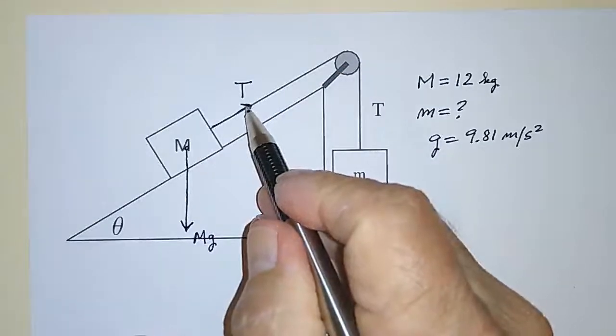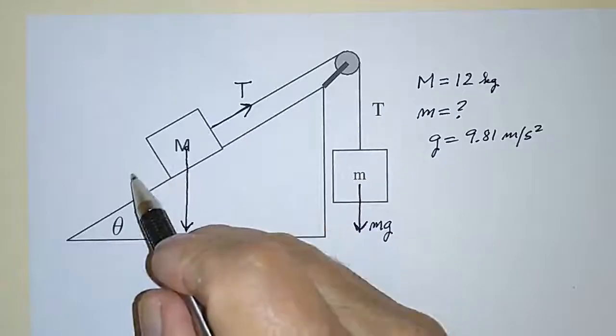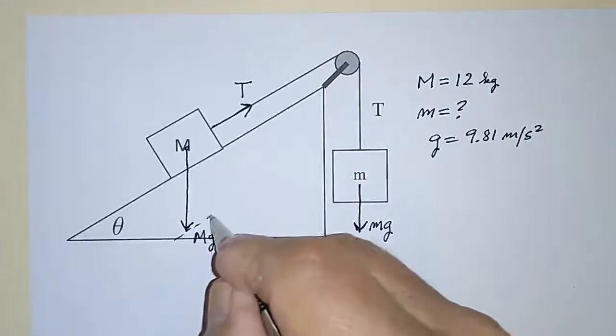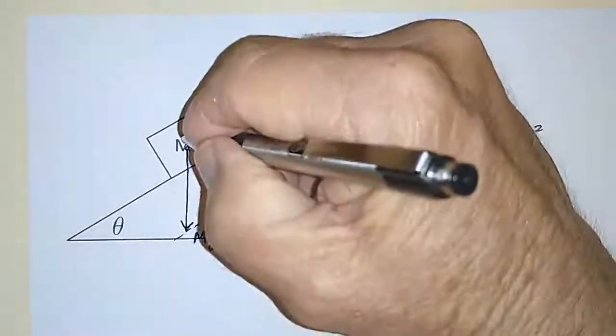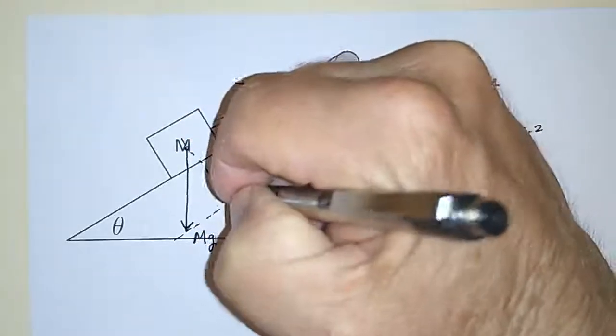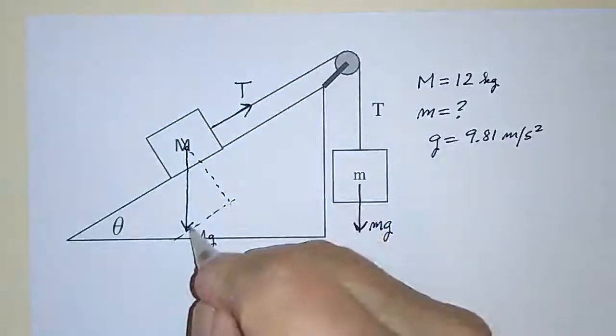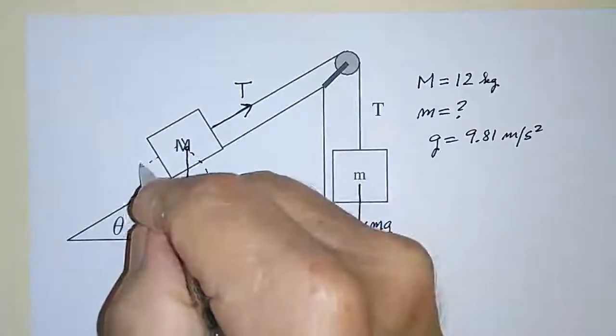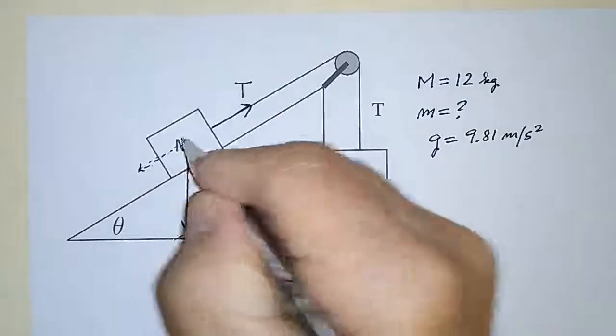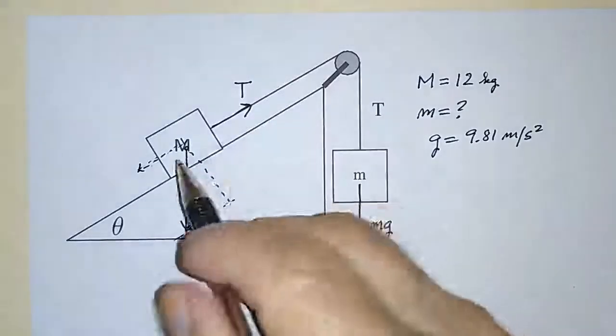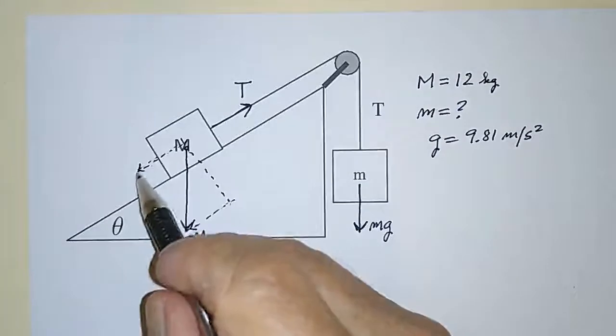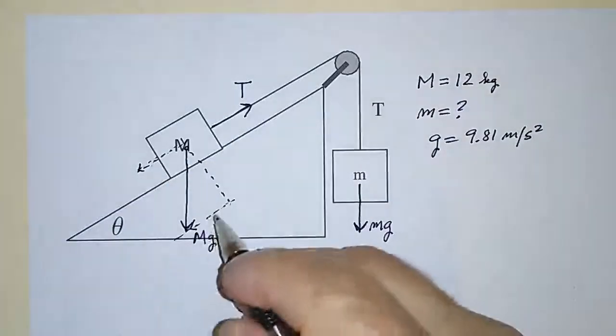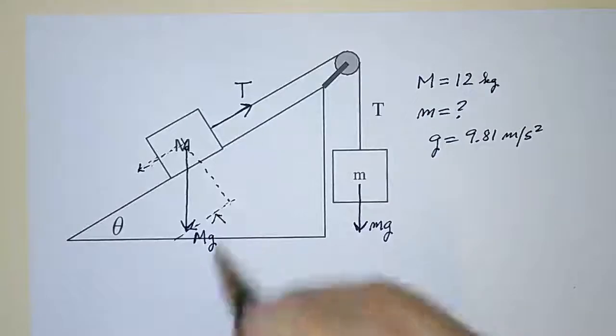In other words, the component of the gravitational force that is parallel to the plane, that is, this component right here, this has to be equal to T, otherwise it moves, and even though I haven't drawn it exactly here, that's the case. So what we have to figure out is what this is.